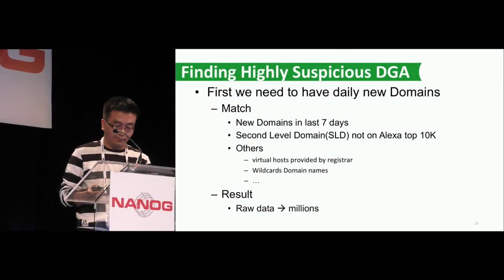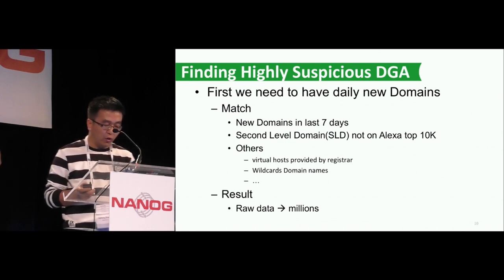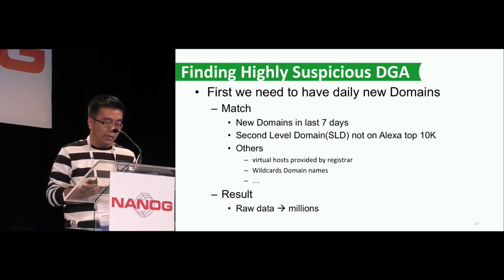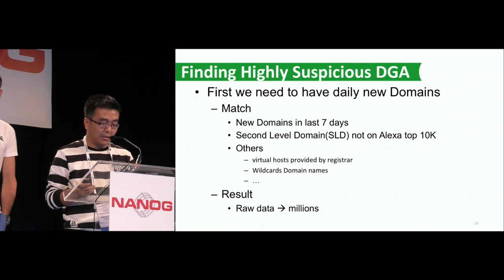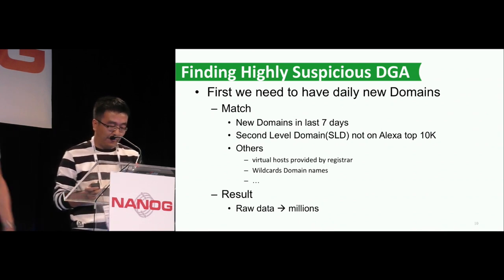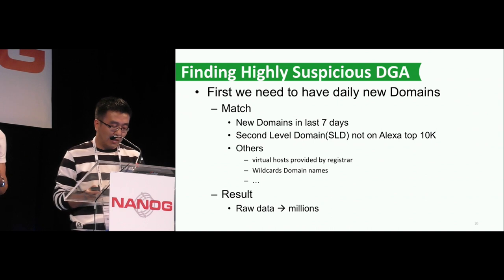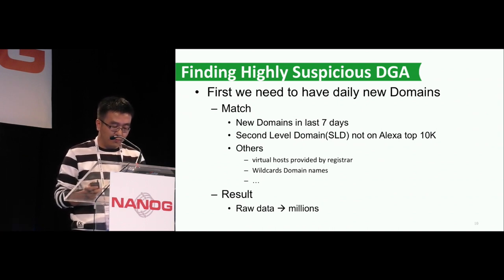How to find the highly suspicious DGA domains from passive DNS? First, we need to get all the daily new domains. We are only going to focus on new domains that showed up in the last seven days. Domains whose SLD is on the Alexa top 10K list will be dropped. We also use some other quick filters, such as filtering out Wirecard domains. As a result, instead of dealing with all the raw data, we only need to work on about a million domains as the starting point.